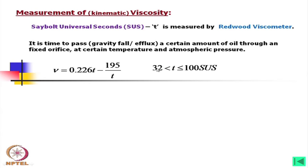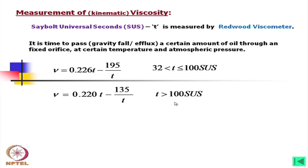It has been found that below 32 seconds the results are erratic. This is an empirical relation which we can use where t is between 32 and 100 SUS, where t is the time; and if it is more than 100 SUS, we should use a different formula. This will directly give you the kinematic viscosity of the oil.